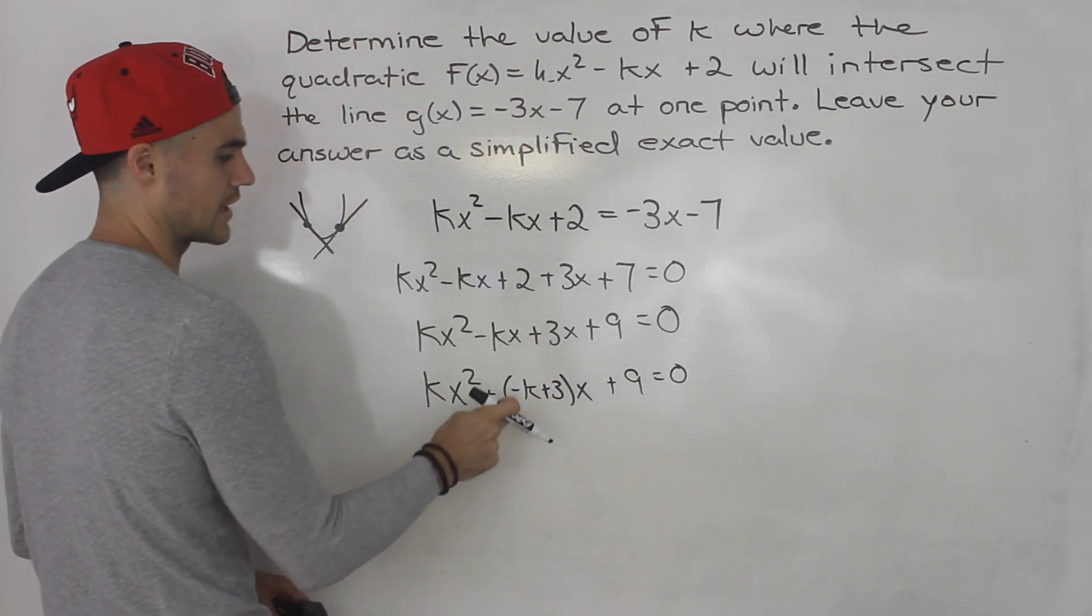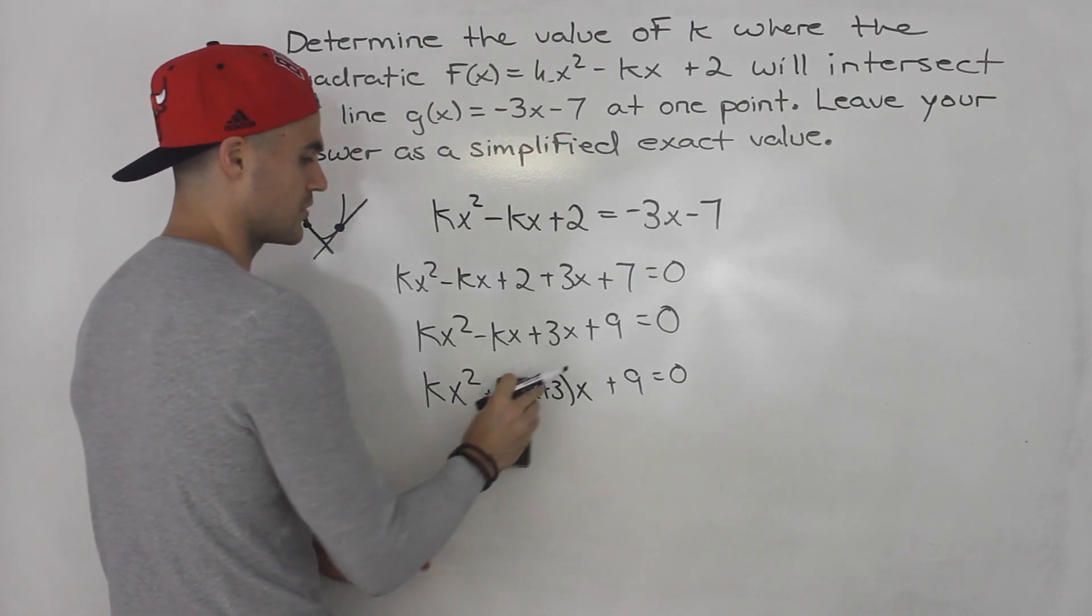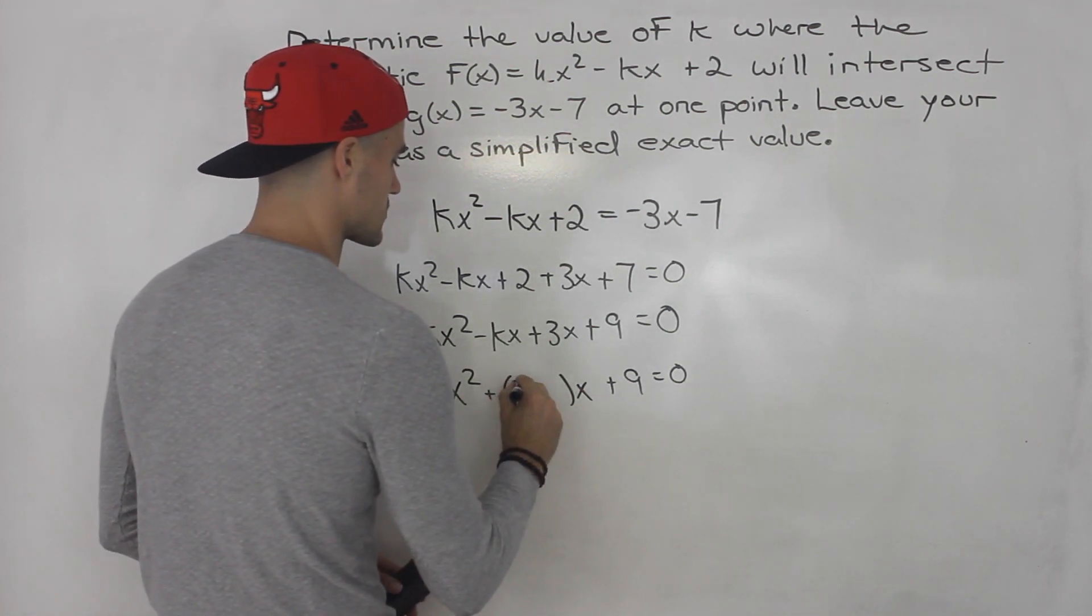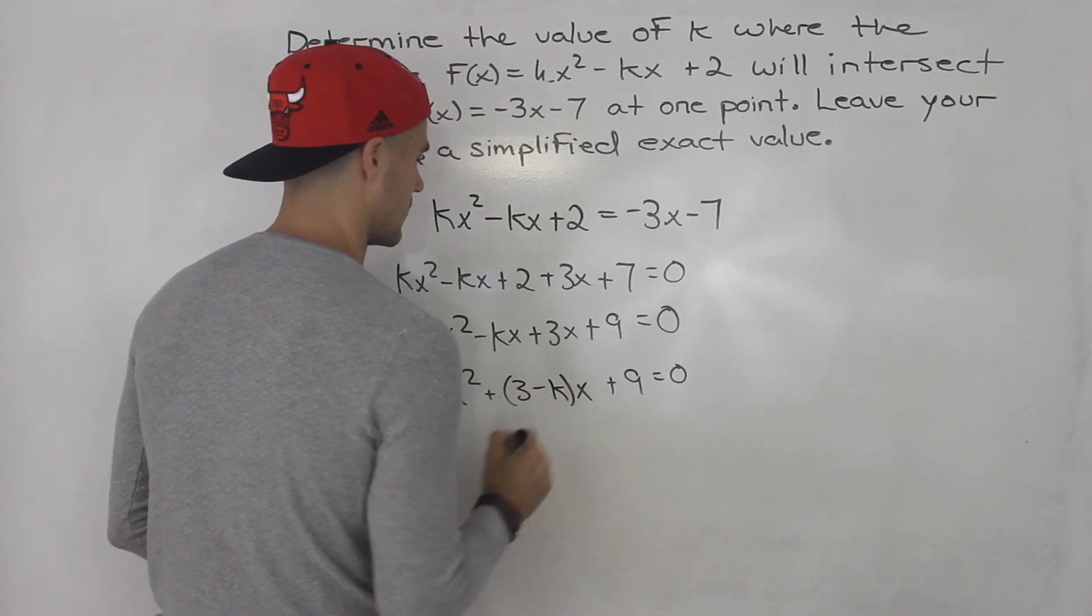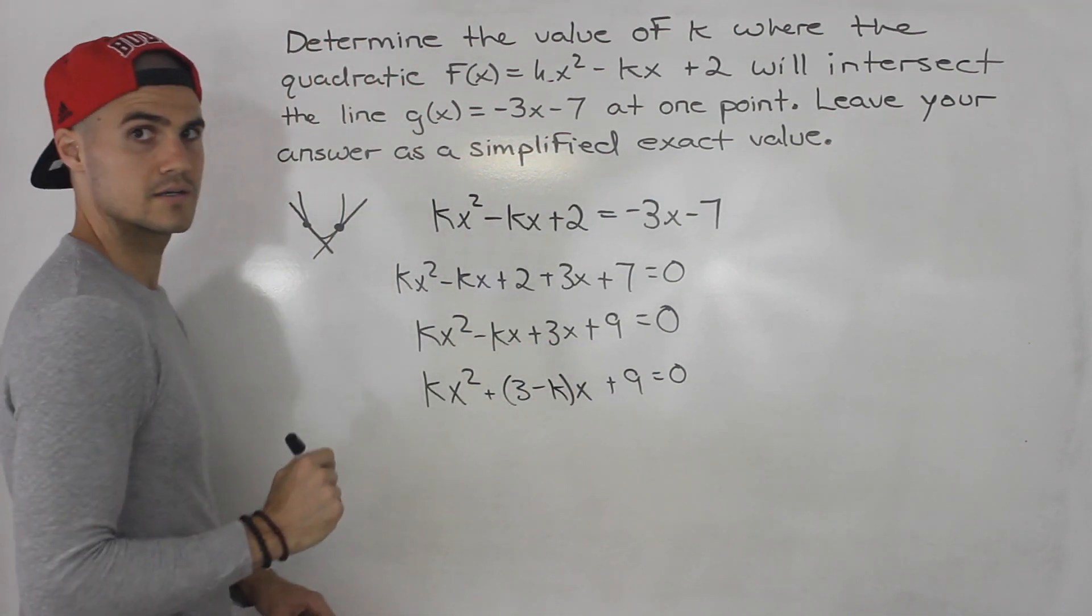And if you want to make this look a little nicer, instead of putting negative k plus 3, you could put 3 minus k. Both of those are the same thing.